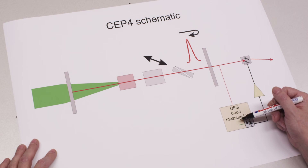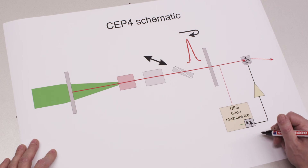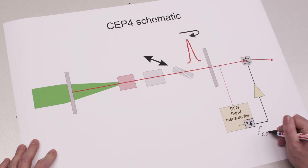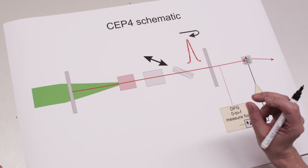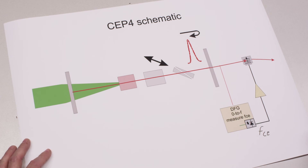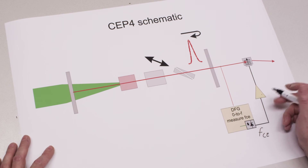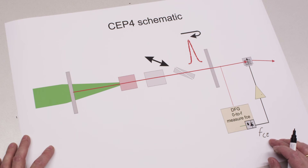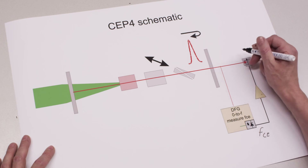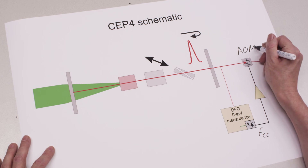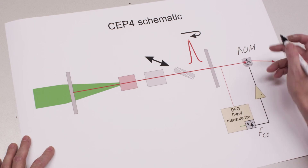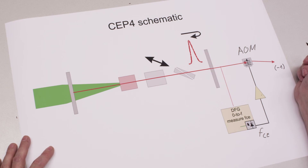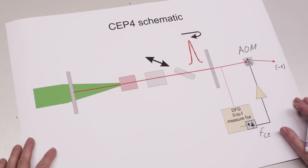The control scheme for the feed-forward technique is quite simple. At the oscillator output, we measure the carrier envelope offset frequency. At femtolasers, this is done with a small crystal using the zero-to-f approach. We amplify the carrier envelope offset frequency, apply it to the AOM, align everything for the minus first order diffraction, and subtract the f_CEO from the frequency comb. If we set the AOM drive to the carrier envelope offset frequency, the pulse diffracted in the minus first order has no carrier envelope offset frequency component at all — it is perfectly carrier envelope phase stabilized. It looks quite fast, and it should give much better results.